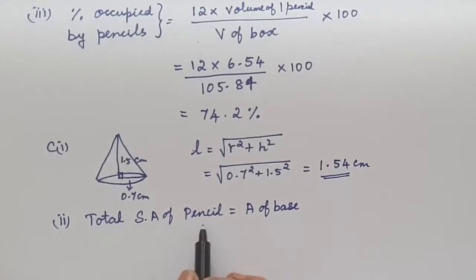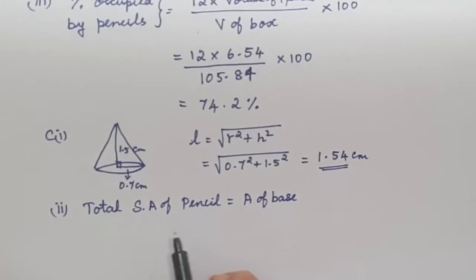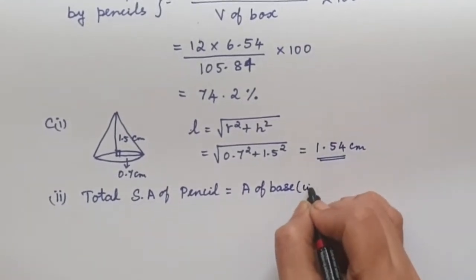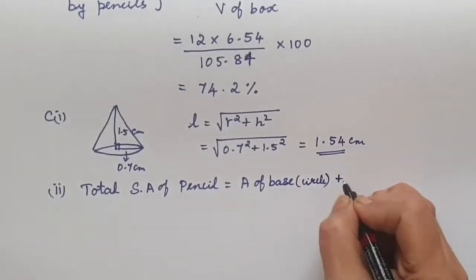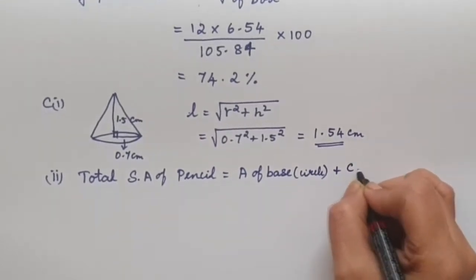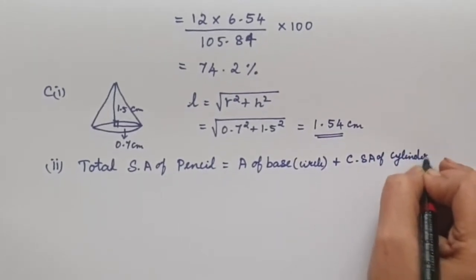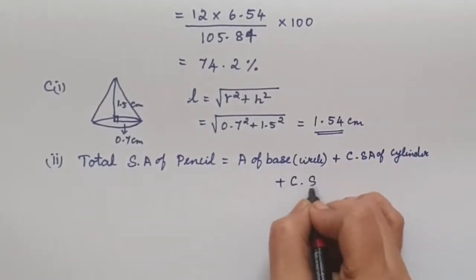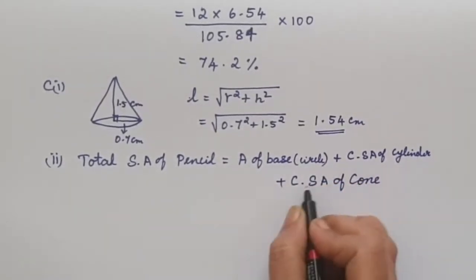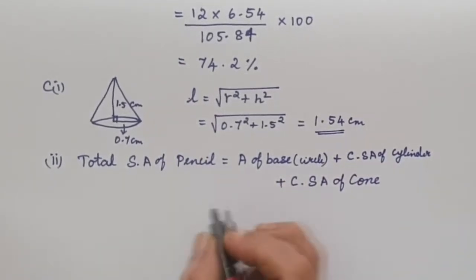In the second part, we need to find the total surface area of the pencil. Whichever face is visible in the figure, we must include. The base is a circle, so we take the area of the circle. Then the curved part of the cylinder, that is the curved surface area of the cylinder. The top is a cone, and only its curved part is visible, so we add the curved surface area of the cone. All these together give the total surface area.